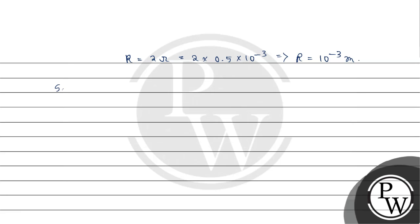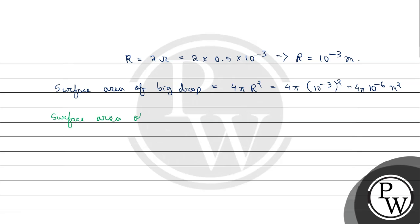The surface area of the big drop equals 4π × R², which is 4π × (10⁻³)² = 4π × 10⁻⁶ meter squared. The surface area of the 8 smaller droplets equals 8 × 4π × r², which is 8 × 4π × (0.5 × 10⁻³)².